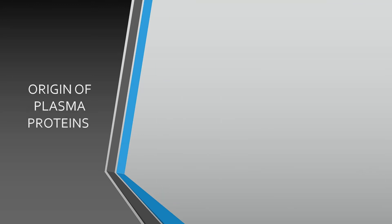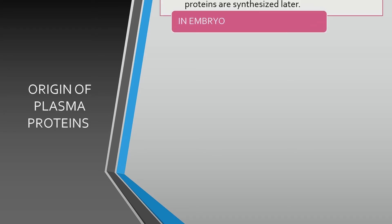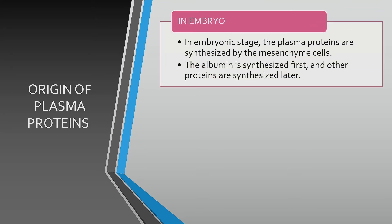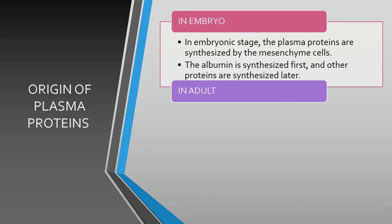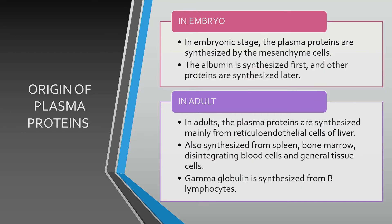Now comes the origin of plasma proteins. In the embryonic stage, the plasma proteins are synthesized by the mesenchyme cells. The albumin is synthesized first, and other proteins are synthesized later. In adults, the plasma proteins are synthesized mainly from reticuloendothelial cells of the liver, and also synthesized from spleen, bone marrow, disintegrating blood cells, and general tissue cells. Gamma globulin is synthesized from B lymphocytes.